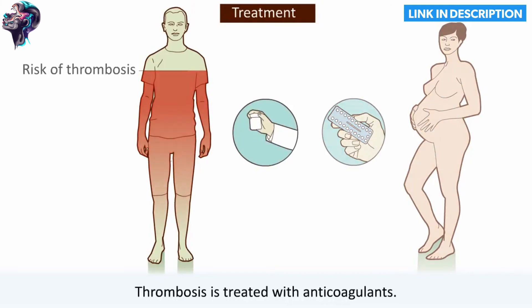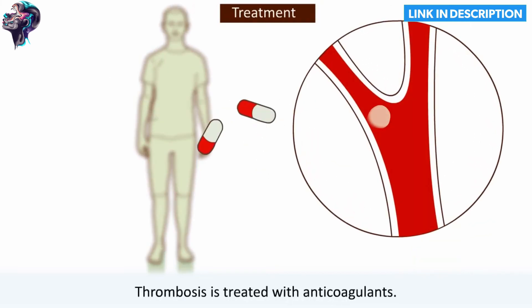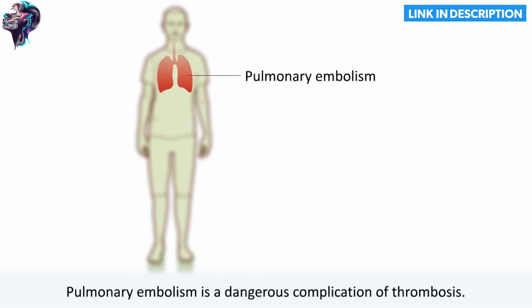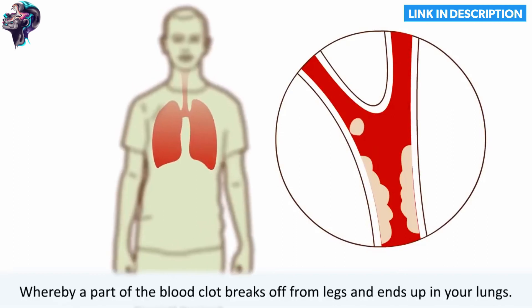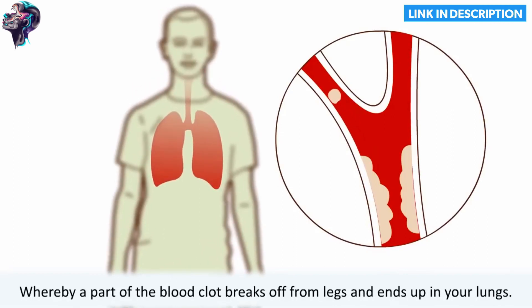Thrombosis is treated with anticoagulants. Pulmonary embolism is a dangerous complication of thrombosis, whereby a part of the blood clot breaks off from the legs and ends up in your lungs.